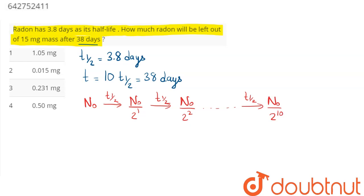And as we know, the number of nuclei is directly proportional to the mass. Hence, we can say the radon amount